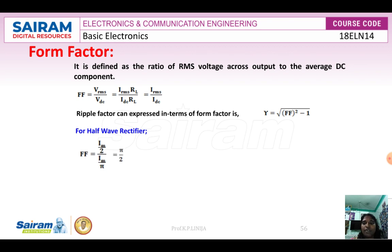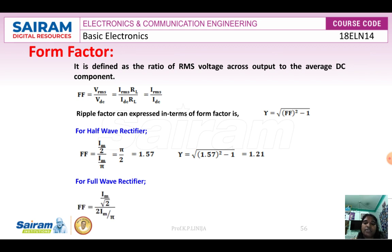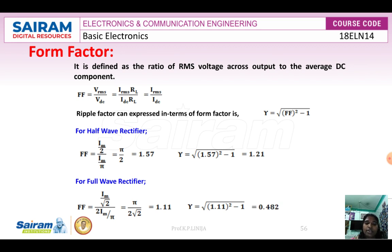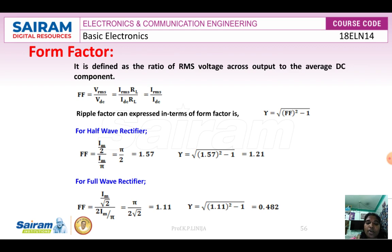For the half wave rectifier, the form factor equals π/2, so gamma equals the square root of (1.57² − 1), giving a ripple factor of 1.21. For the full wave rectifier, the form factor equals π/(2√2), which is approximately 1.11. Therefore gamma equals the square root of (1.11² − 1), which equals 0.482.